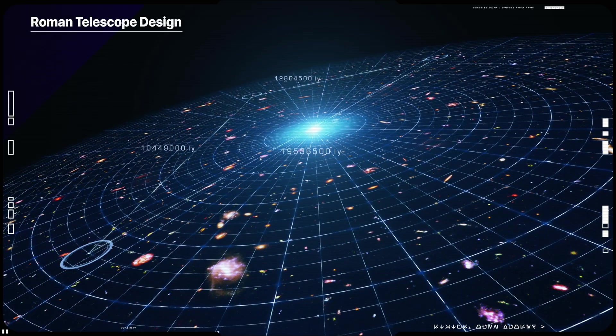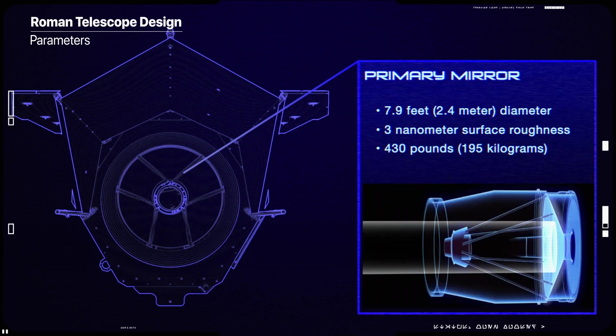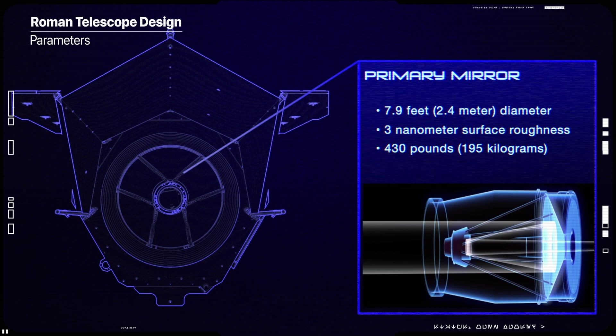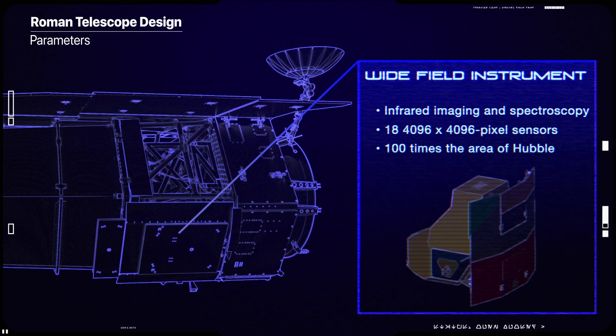Roman Telescope has a primary mirror that is 2.4 meters in diameter and is the same size as the Hubble Telescope's mirror. It also has the same sensitivity as Hubble's primary mirror, but will only be one-fifth the weight, showcasing an advancement in telescope technology.